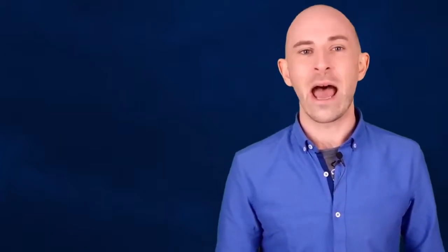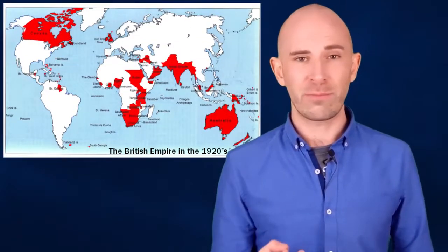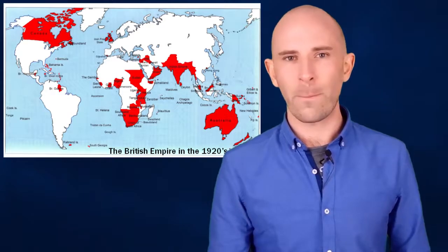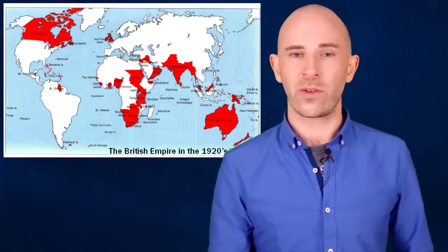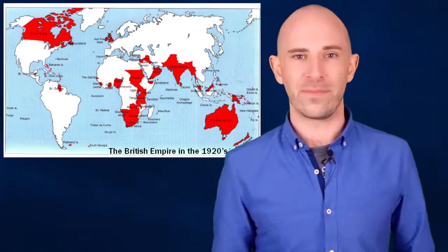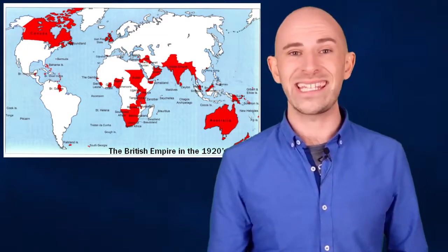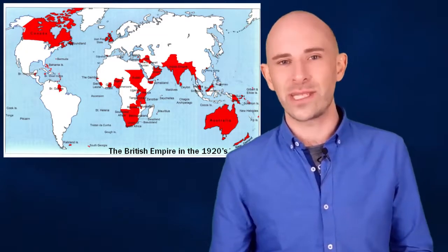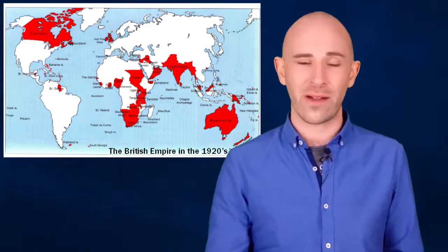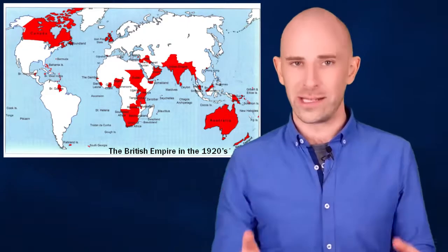Whatever the cause, army planners anticipated that any war with Europe would be prolonged, not only because of British and Canadian tenacity, but also from the fact that Britain could draw more manpower and resources from its empire, including, at that time, Australia, Hong Kong, India, Kenya, New Zealand, Nigeria, Palestine, South Africa, and Sudan.